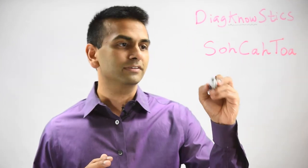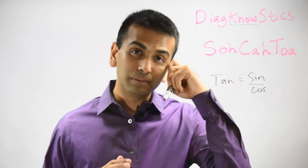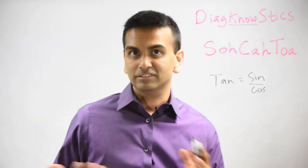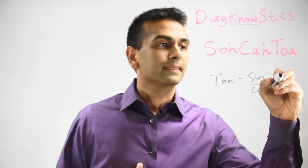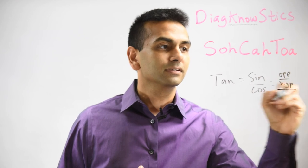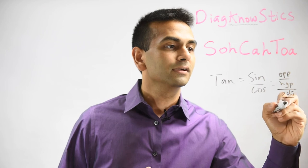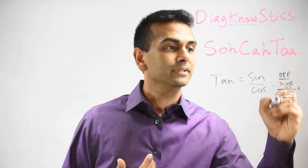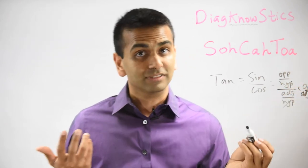One thing about tangent — if you notice, tangent is actually equal to sine over cosine. So a problem might just give you the sine and the cosine without giving you the sides, and ask you to find the tangent — all you got to do is that. We know they're equal because sine is opposite over hypotenuse divided by cosine, which is adjacent over hypotenuse. If you multiply the hypotenuse to the top and the bottom to get rid of it from their denominator, you're just left with opposite over adjacent, which we know is tangent.